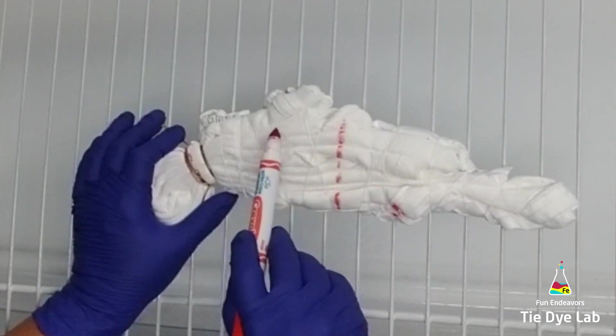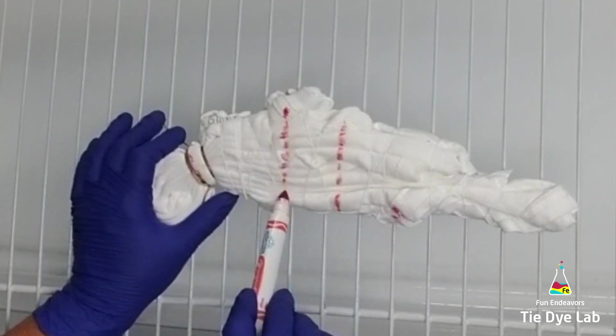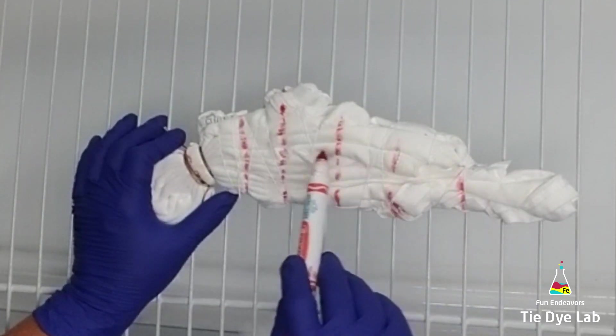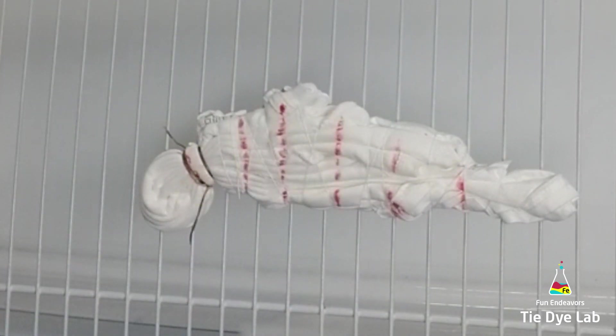Okay, it's almost time to start applying the dye. Before I do though, I want to use a washable marker and draw some lines on my shirt so that I know where I want to put my dye. I'm using six colors for this shirt, so I'm going to make six different sections.